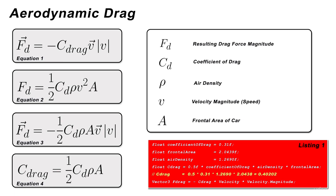As you can see, C_drag is equal to 0.5 multiplied by 0.31 multiplied by 1.2690 multiplied by 2.0439, resulting in a C_drag constant of 0.40202. We then compute our final drag force vector F_drag by simply multiplying C_drag by our velocity vector, by our velocity's magnitude.